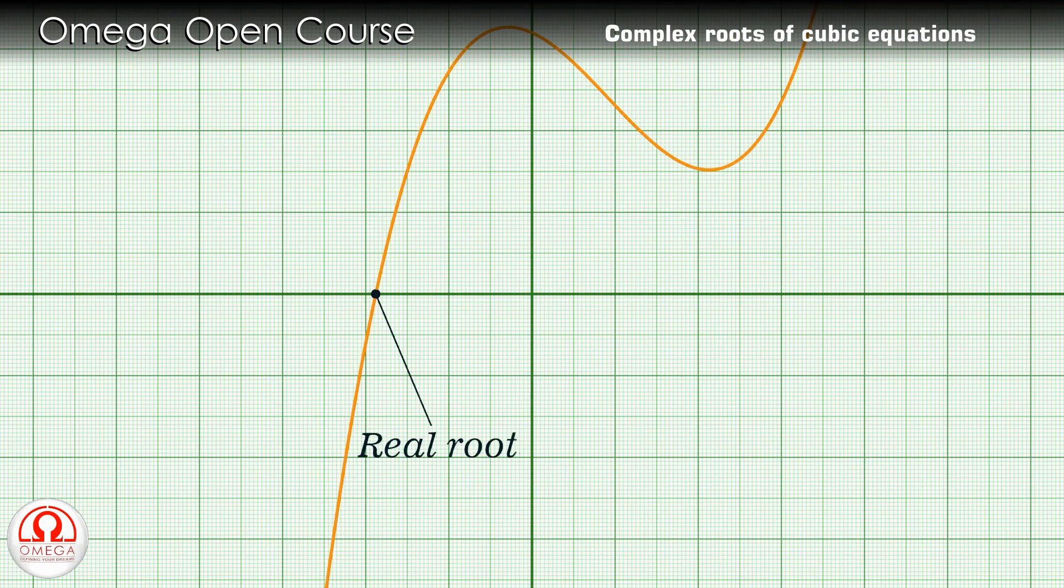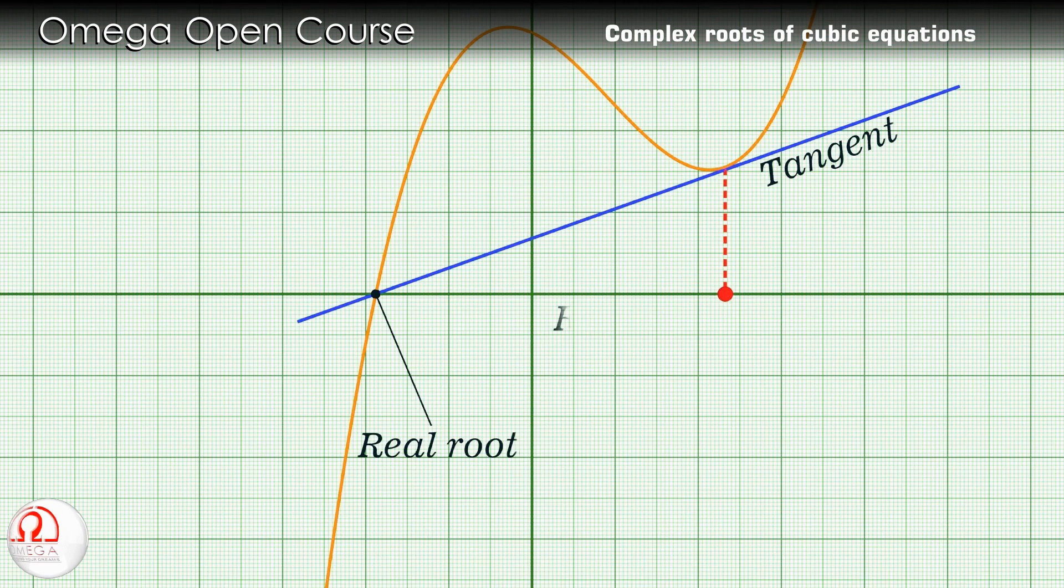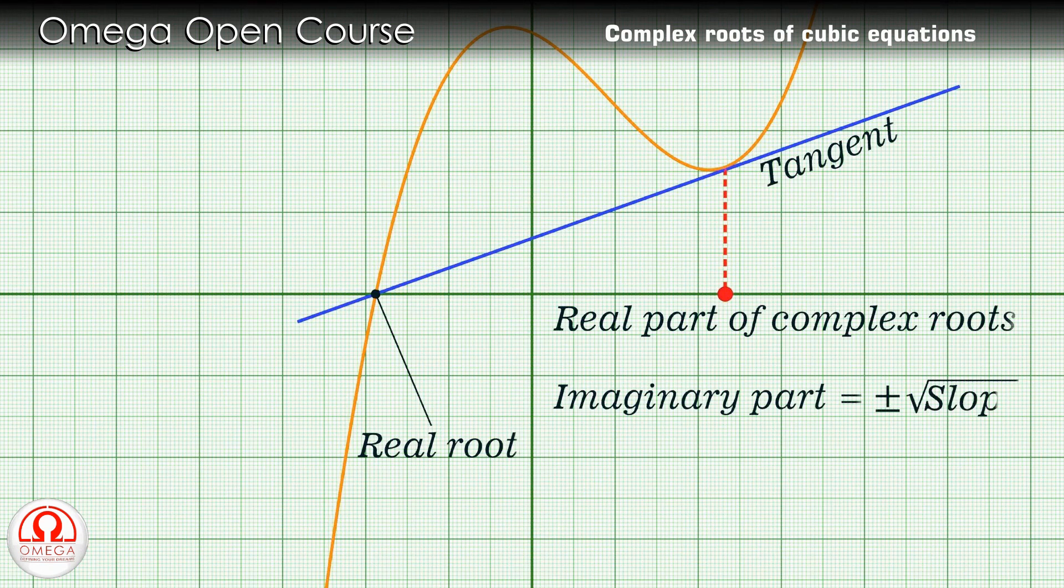To find the real and imaginary parts of these complex roots, draw a tangent to the curve from the point of intersection of the graph with the x-axis. The x-coordinate of the point of contact of this tangent with the curve gives the real part of the complex root. The imaginary part of the root is the square root of the slope of this tangent.